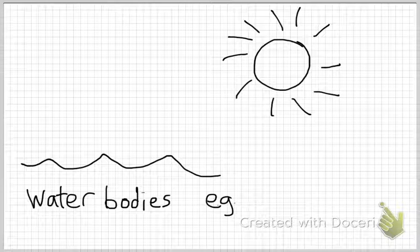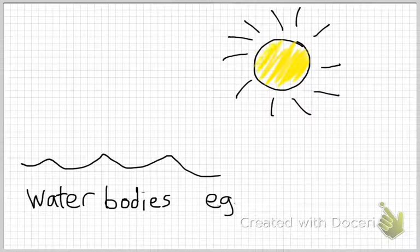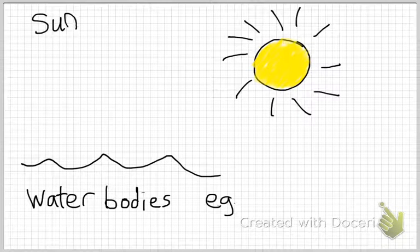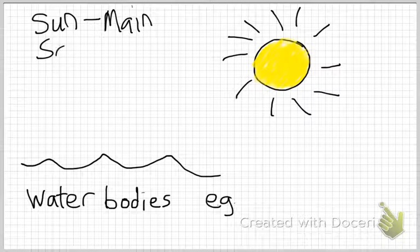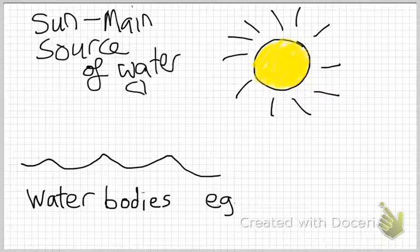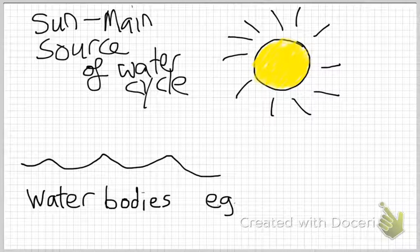The main source for water cycle to occur is the Sun. Without the Sun there will be no water cycle, because the Sun provides heat for water cycle to occur. The Sun is the main source of the water cycle, and it provides heat so that the water cycle can continue.